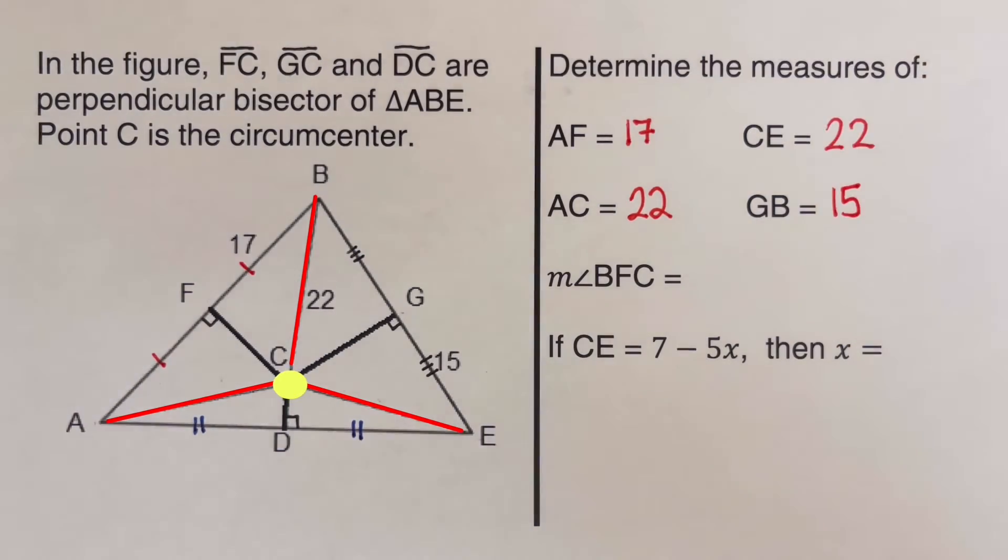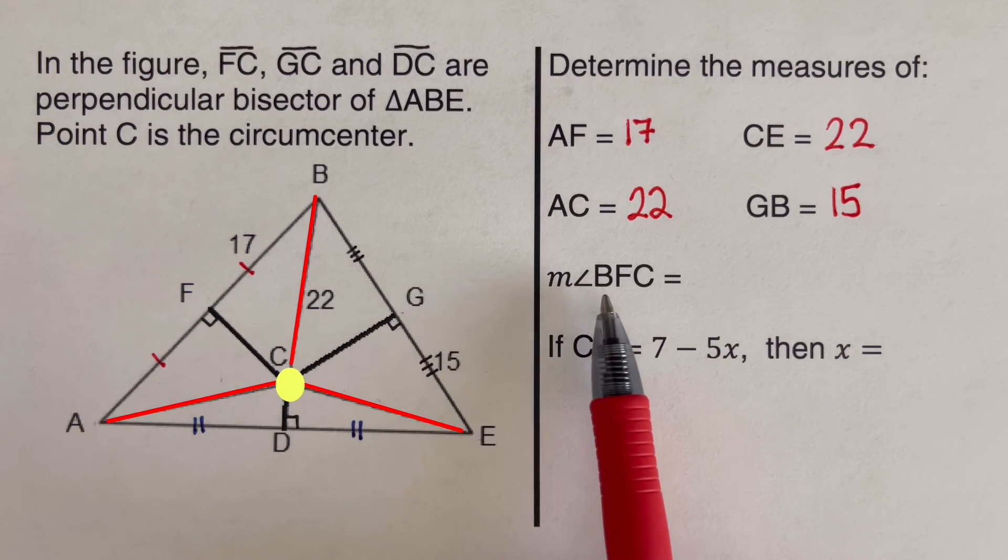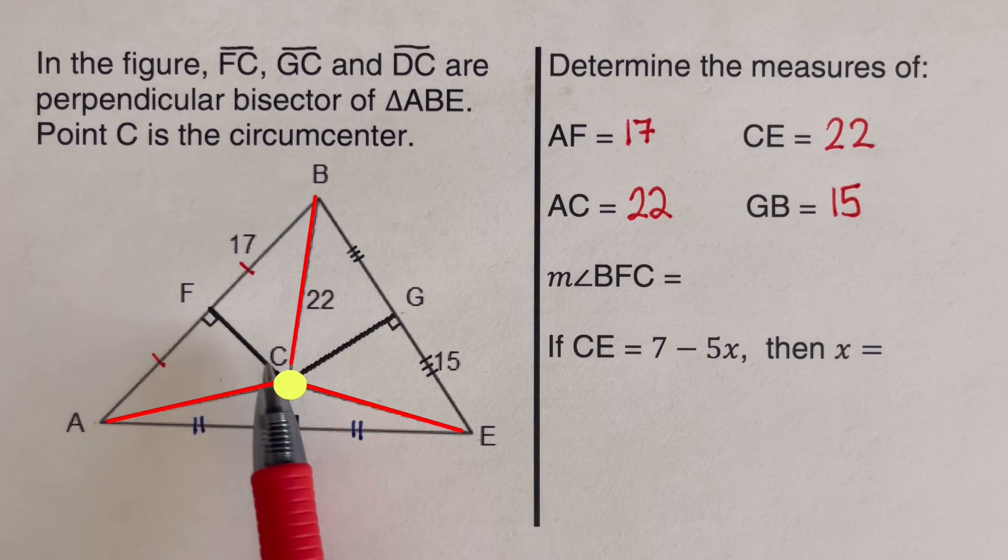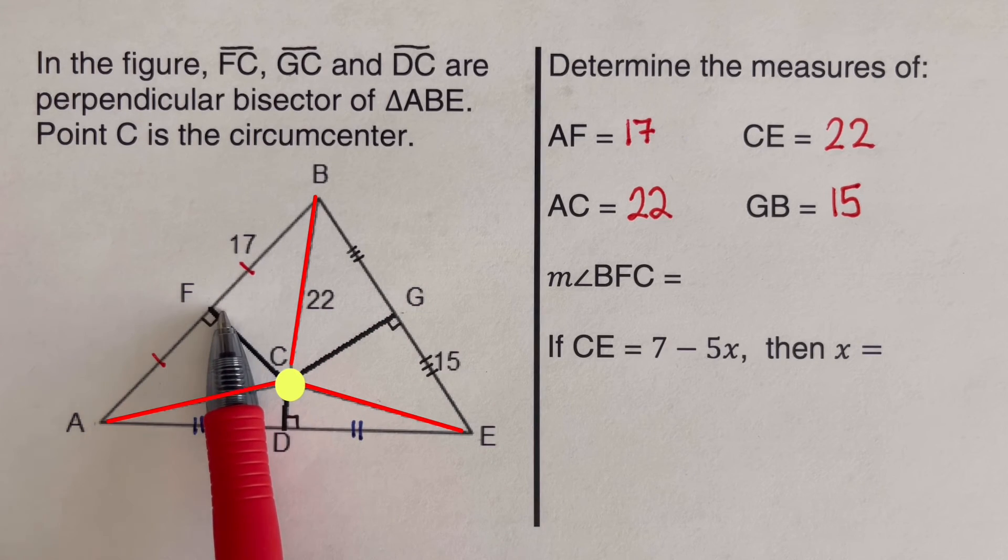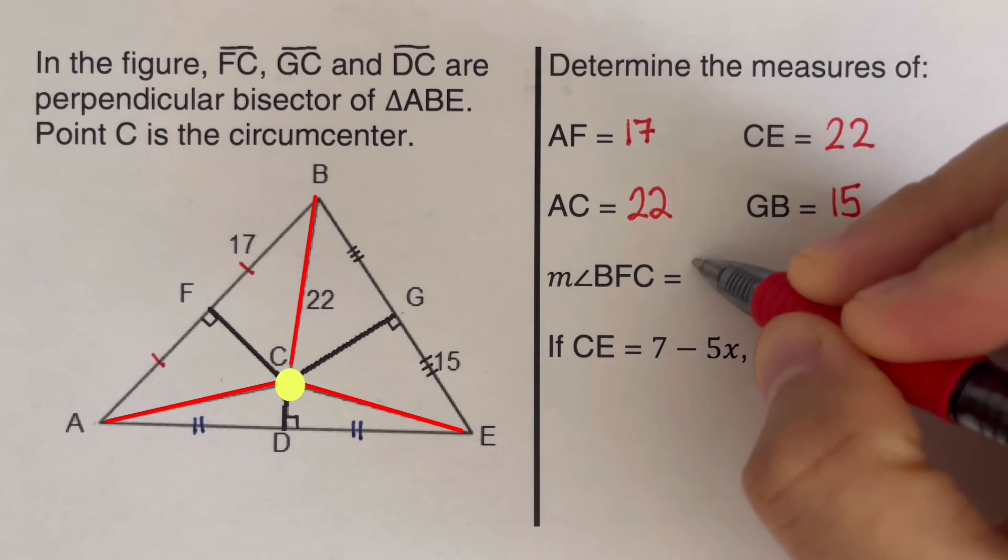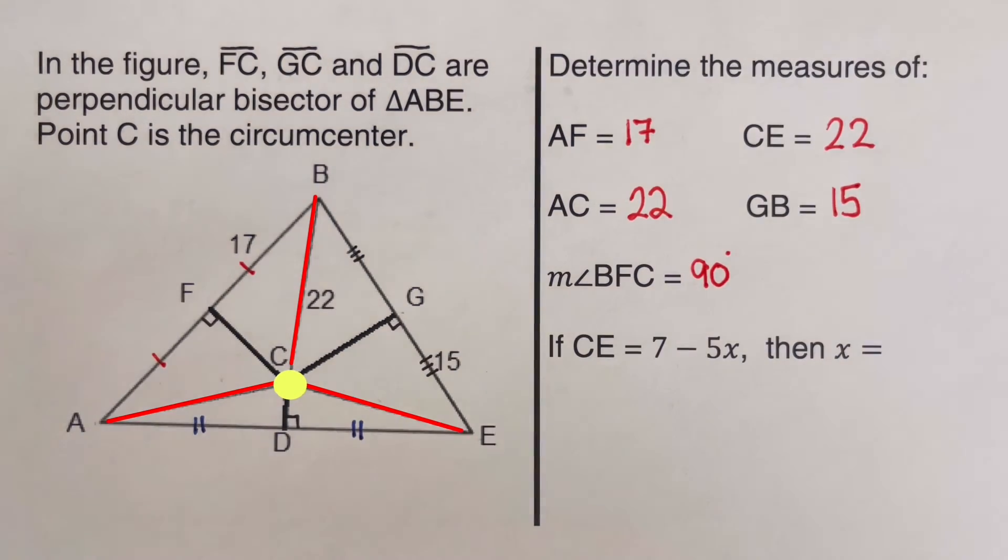Now we are looking for the measure of angle BFC. So BFC is a right angle because this is a perpendicular bisector. So we can go ahead and say that that is a 90 degree angle.